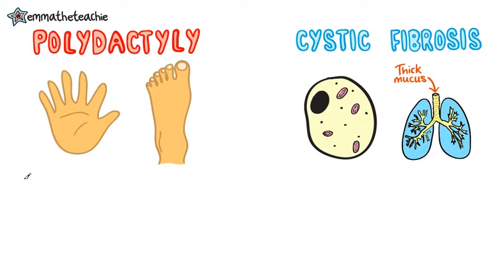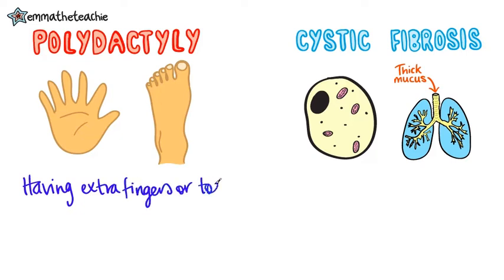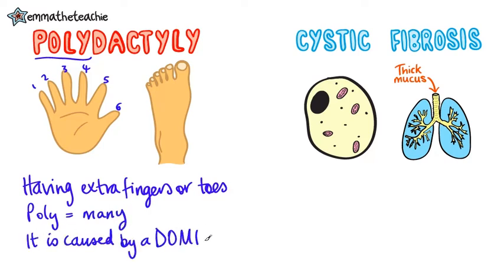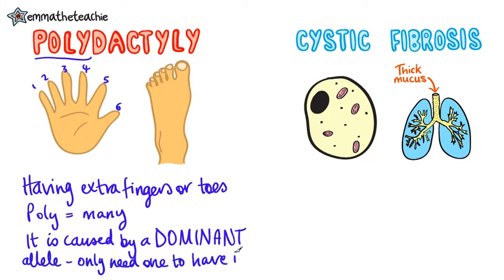People who have the genetic disorder polydactyly will have extra fingers or toes. Part of the word 'poly' actually means many, like a polygon is a many-sided shape. It is caused by a dominant allele, which means people only need to have one allele to get the disorder.